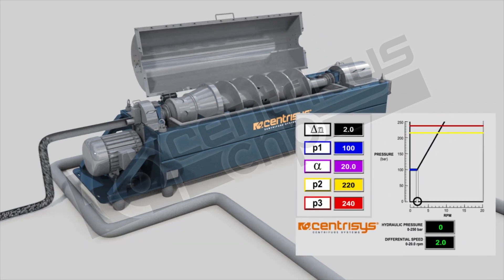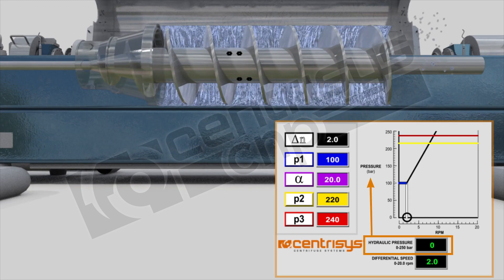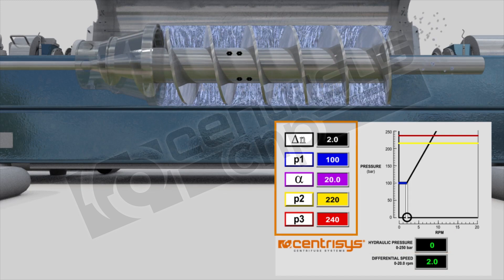On the right hand side we show a graph that shows pressure as well as differential speed, and there are several buttons that are parameter set points that control the automatic regulation of solids movement through the centrifuge.